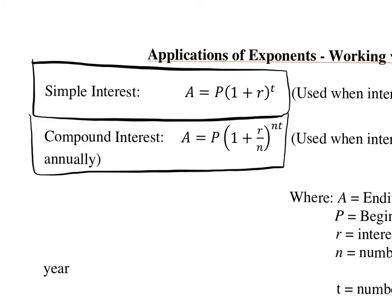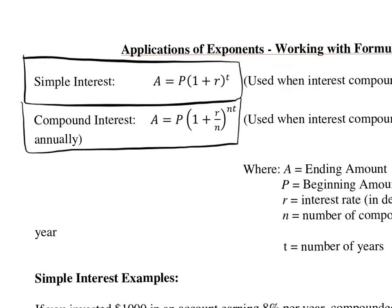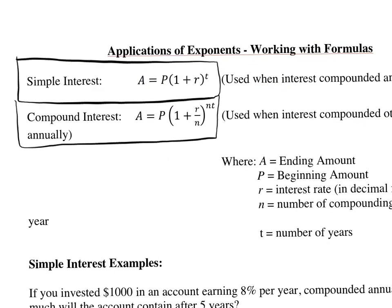To really deal with these formulas, you have to know what all these letters mean. A is our ending amount. Our ending amount equals our P, principal or beginning amount, times 1 plus, and here's where we differ.